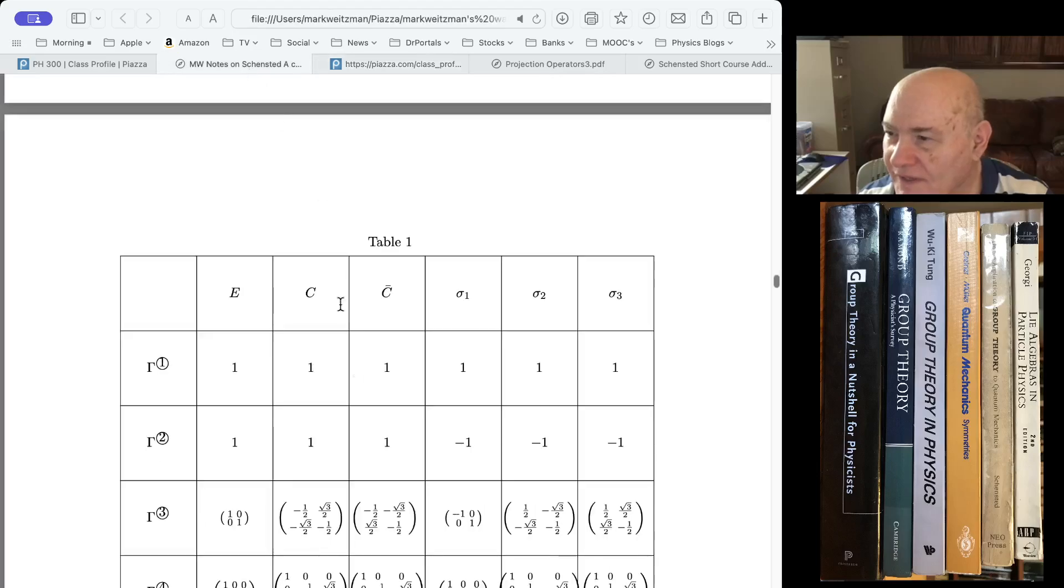You would go over here, like if you were using gamma 3, then you would take this gamma 3, 1, 1, times C, minus 1 half times C, 1 times E, minus 1 half times C bar, etc. So you're using the matrices of the irreducible representation.